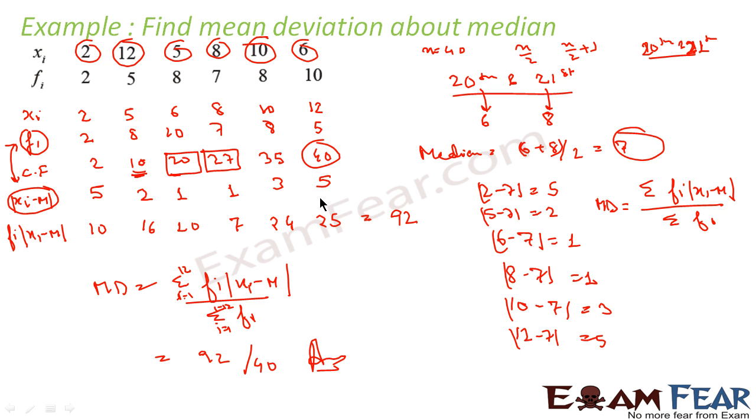What we have done? First thing is we found the median. To find the median, we arranged this in ascending order for all the xi's. Once we have this in ascending order, we found the cumulative frequency. It came out to be 40.